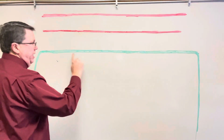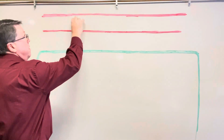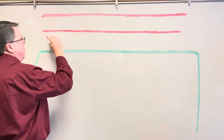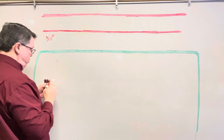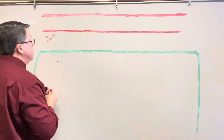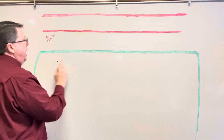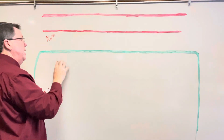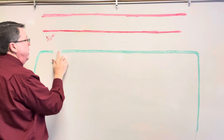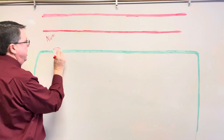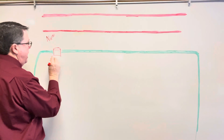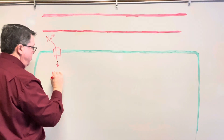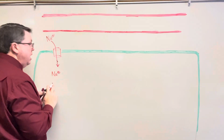So this is going to be a tissue cell, and this will be my plasma membrane. This is going to be the bloodstream. In the bloodstream, we're going to have sodium, and the sodium is going to come out. Now, this isn't under normal circumstances.